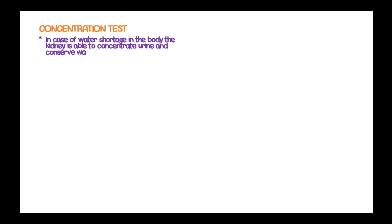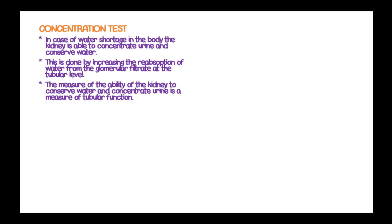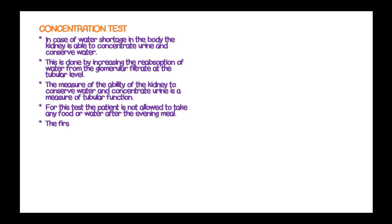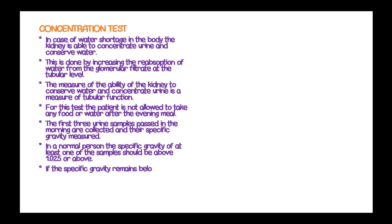In the concentration test, in case of water shortage in the body, the kidney concentrates urine by increasing reabsorption of water at the tubular level. The measurement of the kidney's ability to conserve water and concentrate urine is a measure of tubular function. For this test, the patient is not allowed food or water from the evening meal. The first three urine samples passed in the morning are collected and their specific gravity measured. In a normal person, the specific gravity of at least one sample should be above 1.025. If specific gravity remains below 1.025, it is a sign of tubular dysfunction.